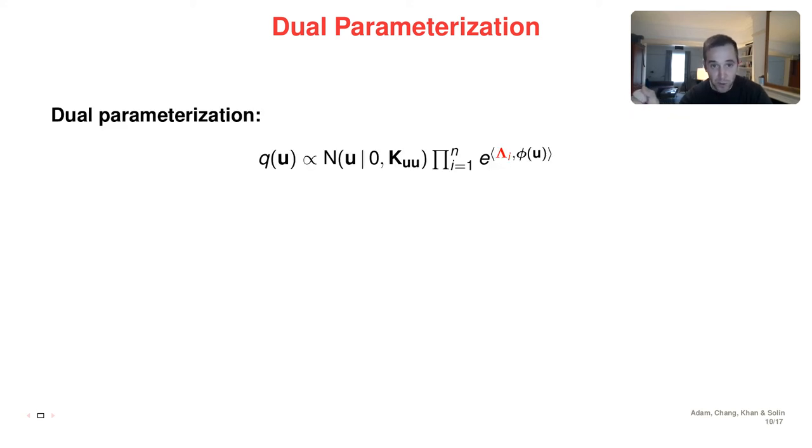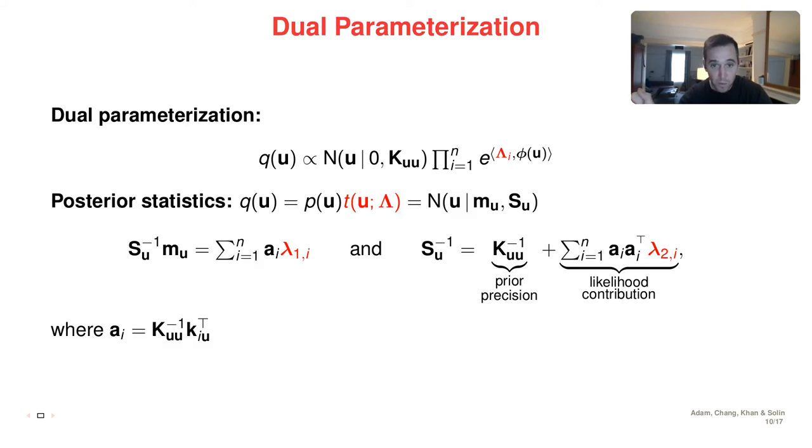So this dual parameterization going further can be split into two terms. One is the prior distribution, so it's a Gaussian with covariance specified by the kernel. And the second one are terms that depend on one term per data point that takes a specific form.